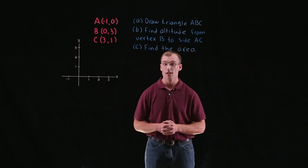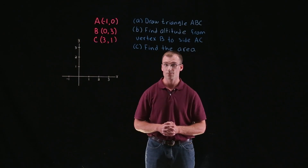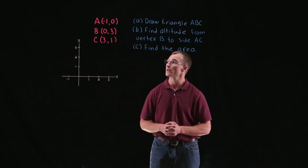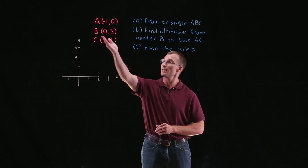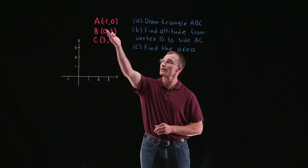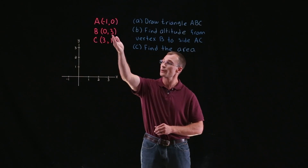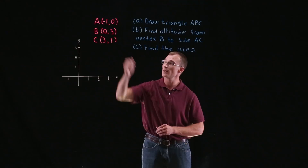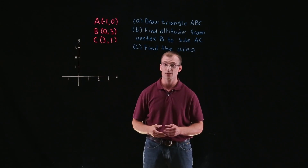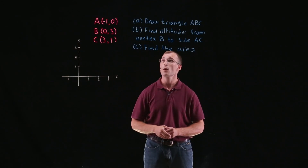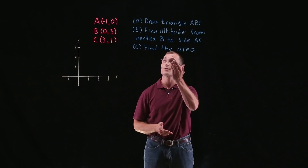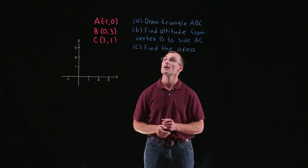Welcome, everyone. I'm Adam. In this problem, for the three points given by A, B, and C with coordinates negative 1, 0; 0, 3; and 3, 1, representing the vertices of a triangle, we're going to do three things.